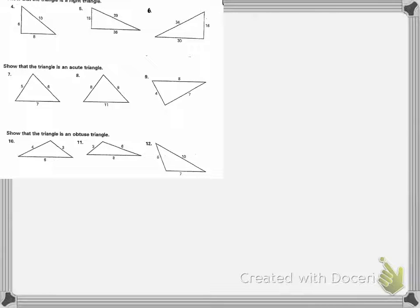We're going to determine if these triangles are right, acute, or obtuse. First we're going to start with our formulas. A squared plus B squared is greater than C squared, then it's acute.